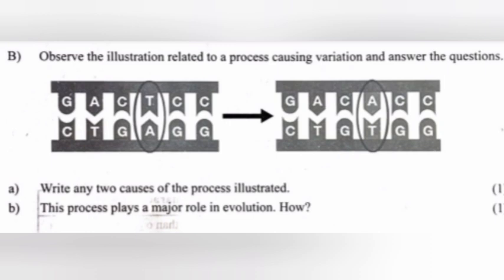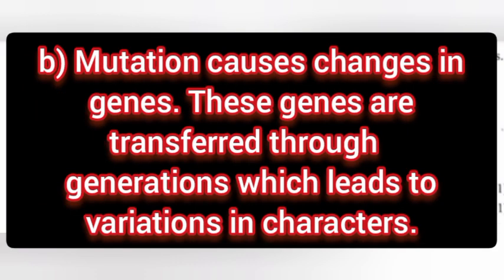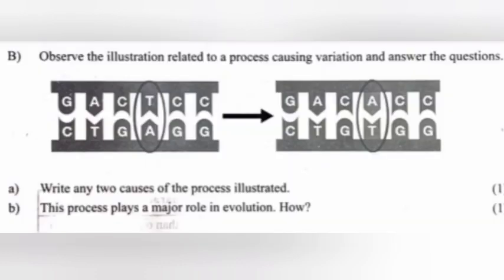Observe the illustration related to a process causing variation and answer the questions. Part a: Write any two causes of the process illustrated. Answer: Errors during DNA replication; exposure to certain chemicals; radiations. Part b: This process plays a major role in evolution. How? Answer: Mutation causes changes in genes. These genes are transferred through generations, which leads to variations in characters.